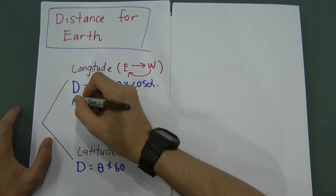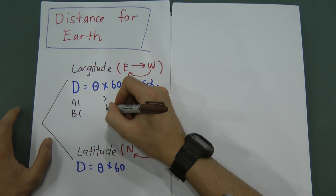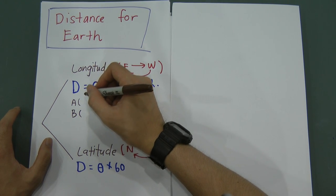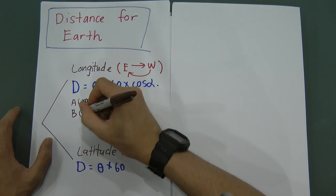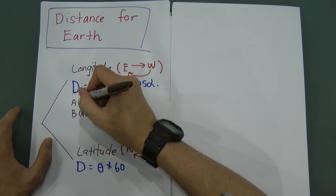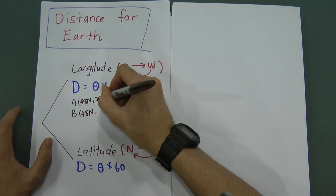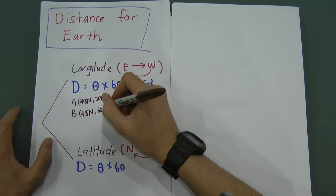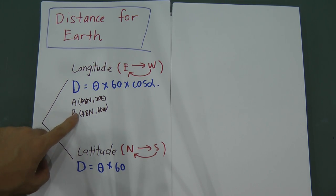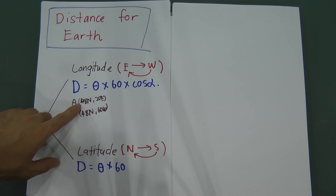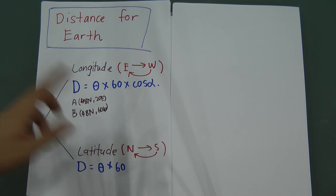Let's say you have two locations, Location A and Location B. Location A is 48 North, 20 East, and Location B is also 48 North, 60 West. From these two locations, you can easily know that they are flying in longitude, because they have the same latitude. So it's impossible they are flying for latitude — they are flying for longitude.